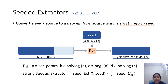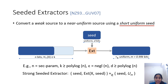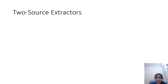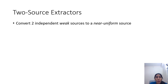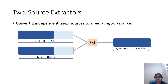One problem with seeded extractors is that you need this uniform, independent source of randomness called the seed. And it turns out that if having access to uniform randomness is difficult in the first place, then getting access to such a seed may be hard. So can we relax things so that the source and the seed can both be imperfect? It turns out that the answer is yes, and this question motivated the setting of two-source extractors, where there are two weak sources of randomness with a certain amount of min entropy each, and the only assumption is that the two sources are independent.